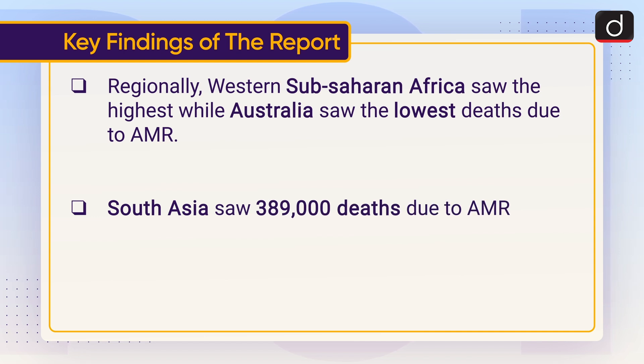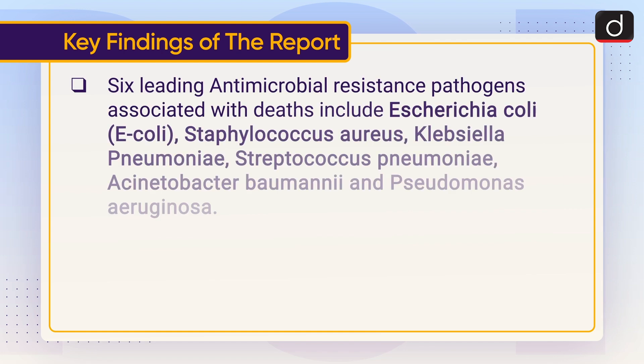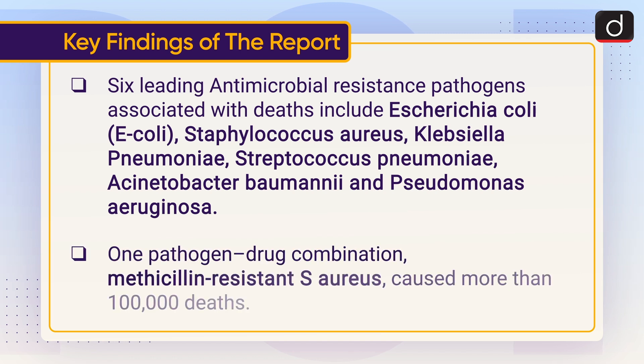Six leading antimicrobial resistance pathogens associated with deaths include Escherichia coli (E. coli), Staphylococcus aureus, Klebsiella pneumoniae, Streptococcus pneumoniae, Acinetobacter baumannii, and Pseudomonas aeruginosa. One pathogen-drug combination — methicillin-resistant S. aureus (MRSA) — caused more than 100,000 deaths.